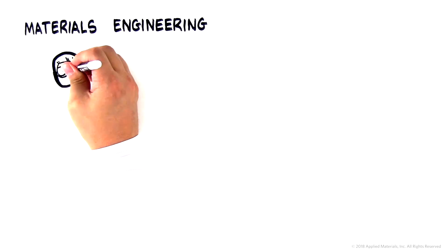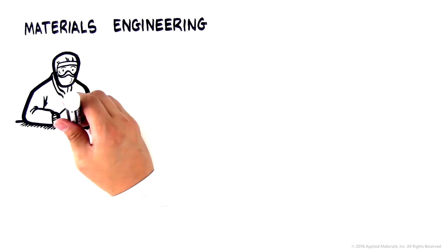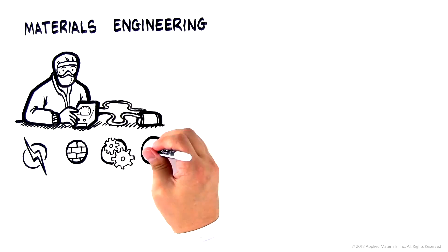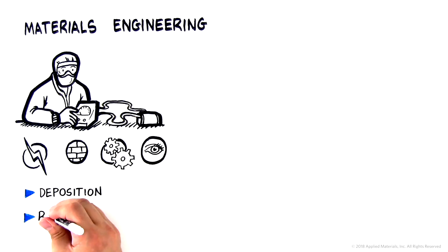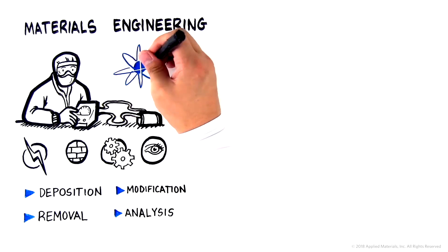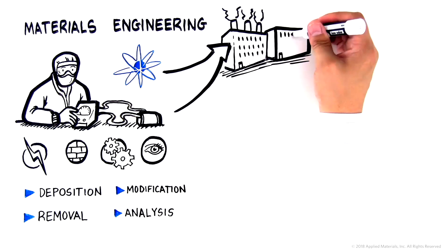Materials engineering is the science of creating and modifying materials, shaping their electrical, physical, mechanical and optical properties. Through highly sophisticated methods of deposition, removal, modification and analysis, we are able to manipulate materials at an atomic level on an industrial scale.